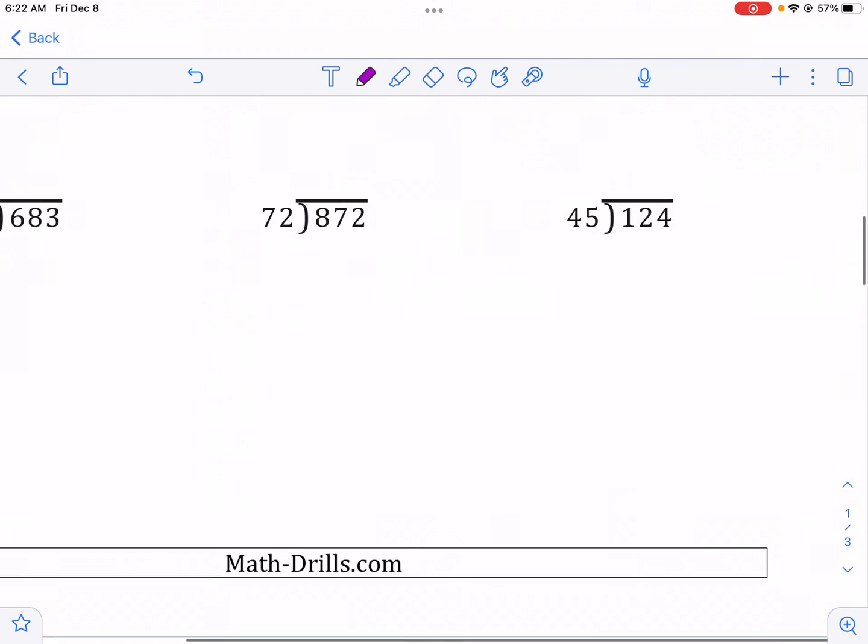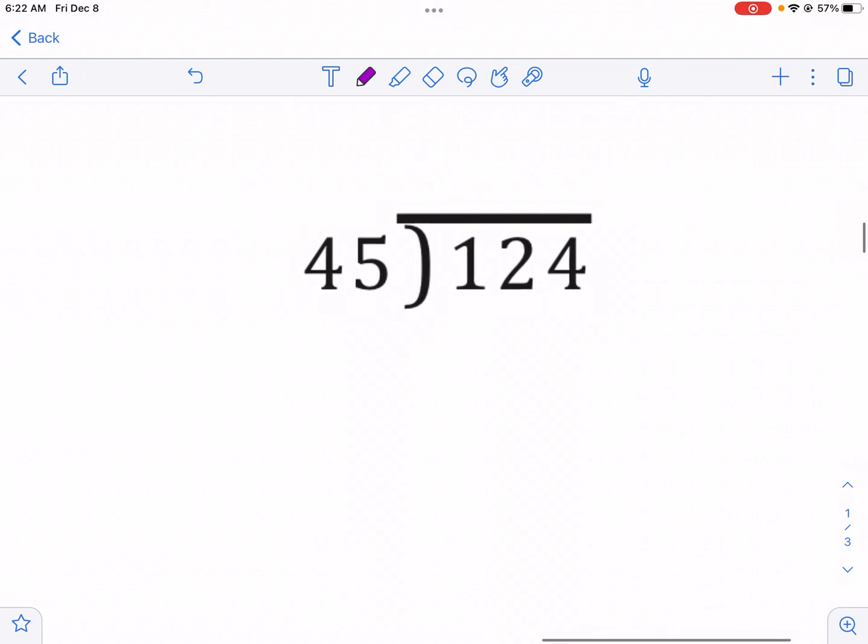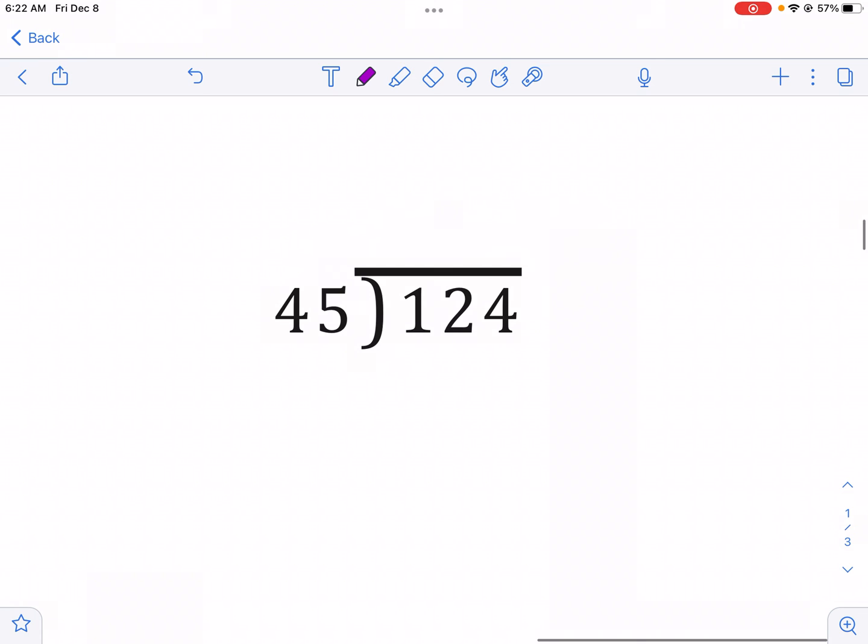Let's do one more. And I'll probably use the standard algorithm for this last one. Let's take a look at this one, just because it's slightly different. So if you look at 45 doesn't go into 1, 45 doesn't go into 12, 45 only goes into 124. So we have to go straight there. I'm going to see if it's 3, because I know 45 times 2 is 90. I don't know if we're going to get there. I think it's going to be too much. But just want to show you the process.